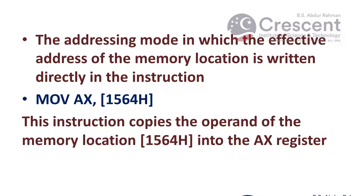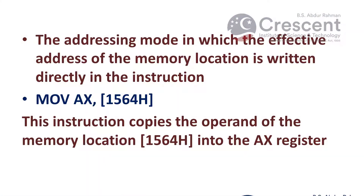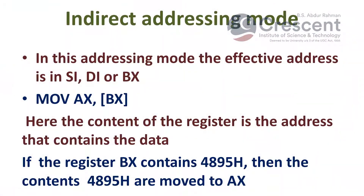The next type is direct addressing mode, in which the effective address of the memory location is written directly in the instruction. For example, MOV AX, [1564H] — this instruction copies the operand or data of the memory location 1564H into the 16-bit register AX.